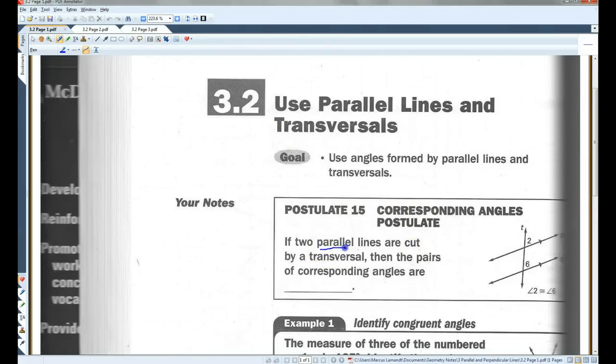If two parallel lines are cut by a transversal, then the pairs of corresponding angles are congruent. So basically, if you have parallel lines, these corresponding angles, also the other three pairs of corresponding angles, are all going to be the same measure.